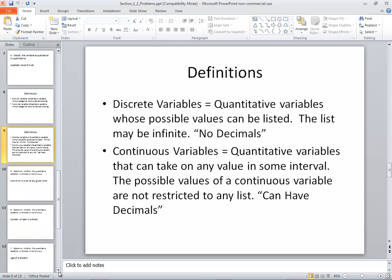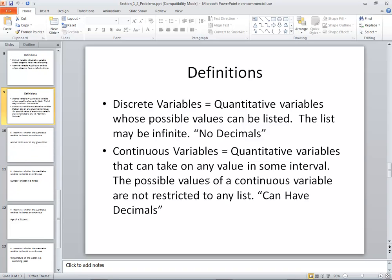Now we've got discrete variables and continuous variables. Discrete variables is quantitative variables whose possible values can be listed. Now, the list may be infinite. And a big part that applies, not on every example, but really does help you think of this, is the idea of, does it have decimals? Continuous variables. Quantitative variables that can take on any value in some interval. Possible values of a continuous variable are not restricted between the lists. And I put here, can have decimals. For example, water dripping out of a faucet. It's not going to drip exactly like one gallon. It might be 1.2 gallons. But if I was able to measure it at a finer level, it might be 1.23 or 1.235. So you can keep on breaking it down further.